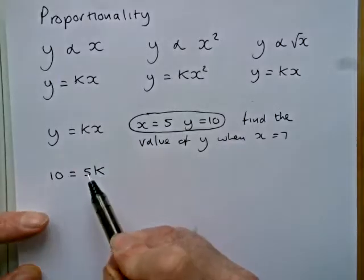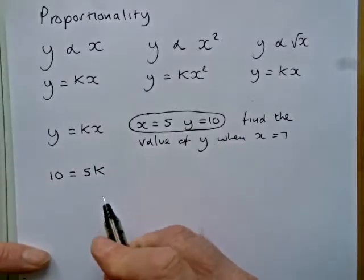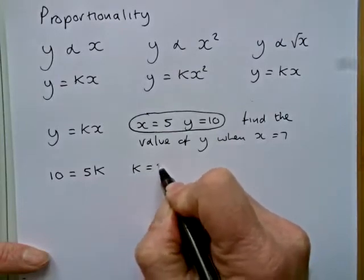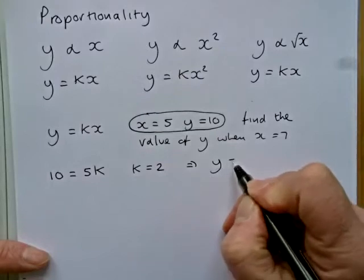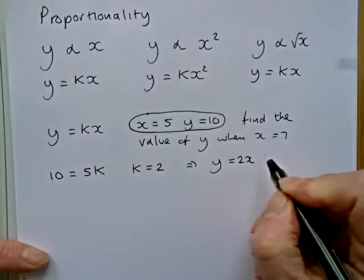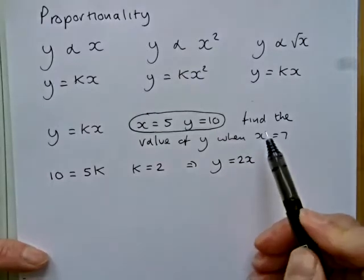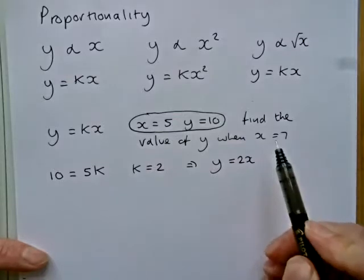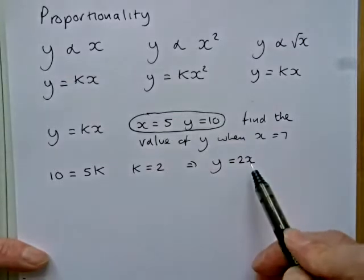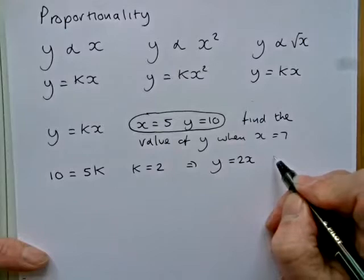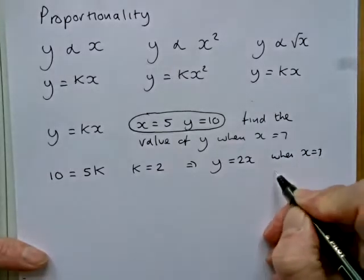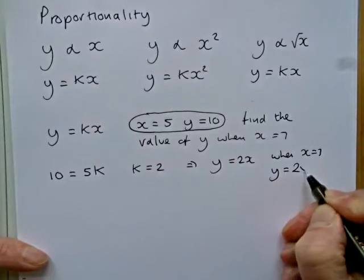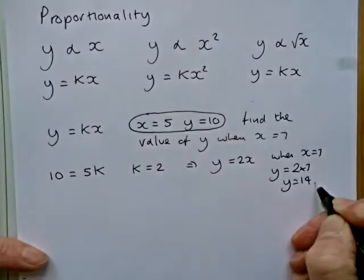We always write the numbers in front of the letters. So 10 equals 5k, so we've worked out then that k equals 2. So this means the relationship we're looking at is that y equals 2x. So then it's relatively simple to finish off because x equals 7 can be put into this equation. So when x equals 7, y will equal 2 times 7, y will equal 14.